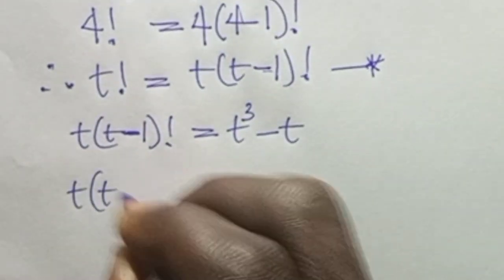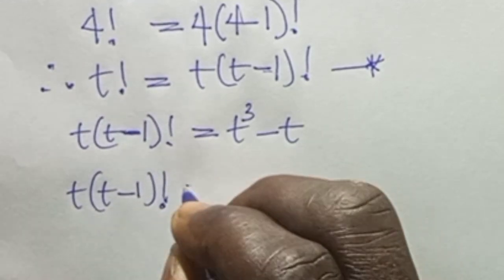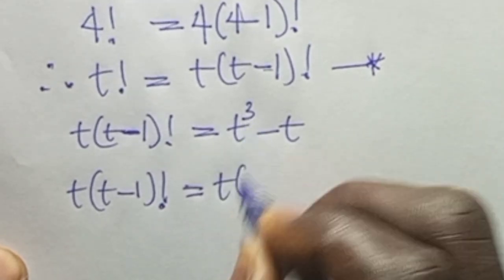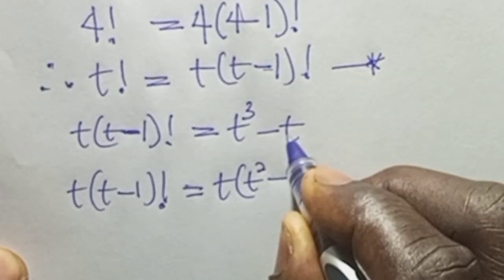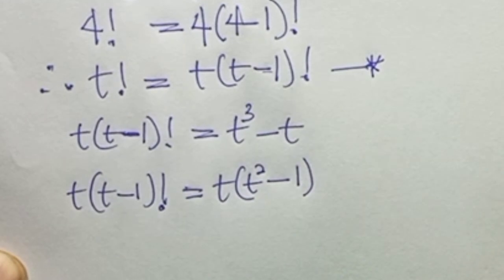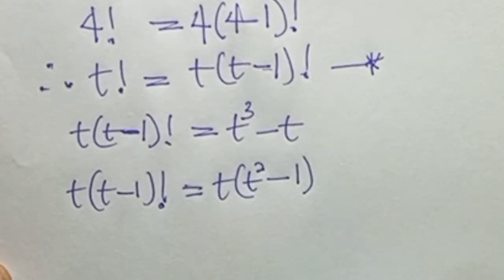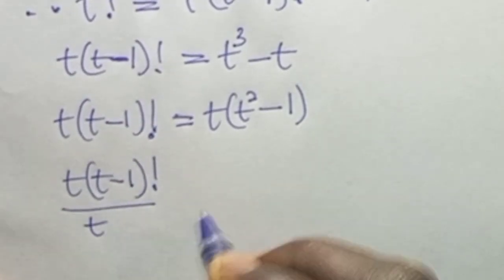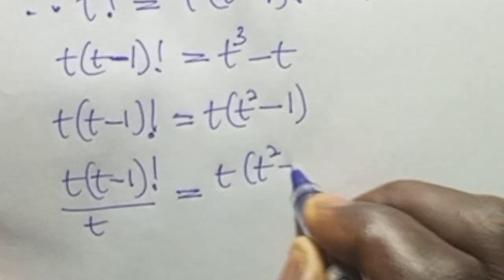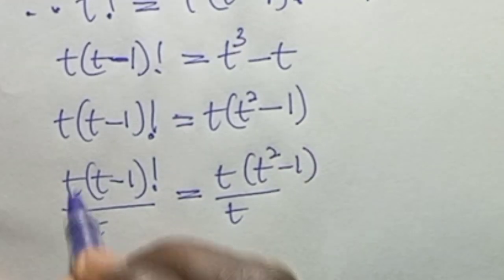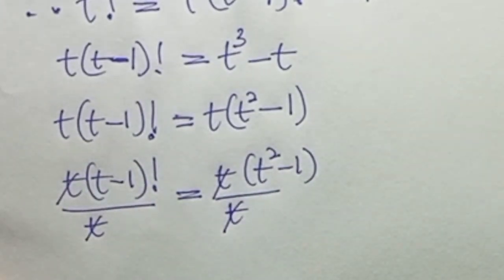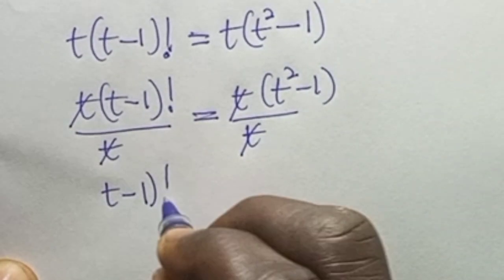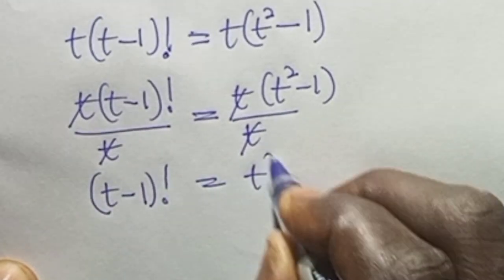We factor out t on the right-hand side: t cubed divided by t is t squared, and t divided by t is 1. Now dividing both sides by t, the t's cancel, and we have (t minus 1) factorial equals t squared minus 1.